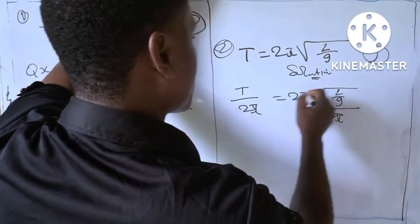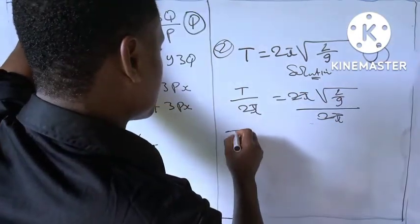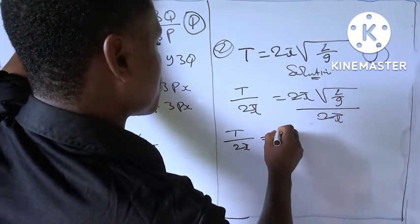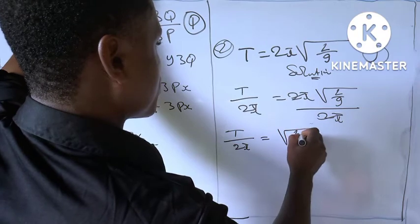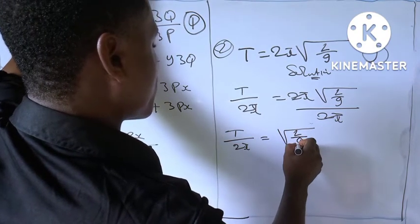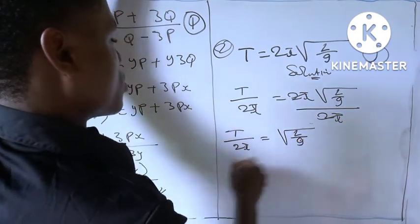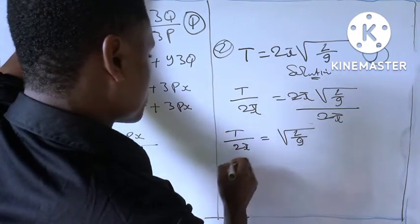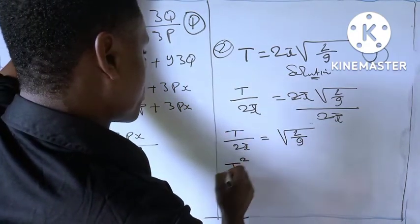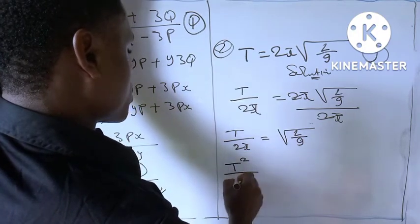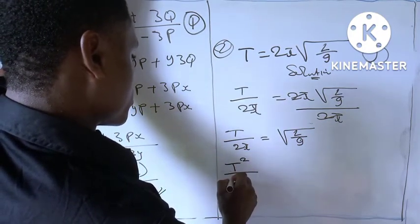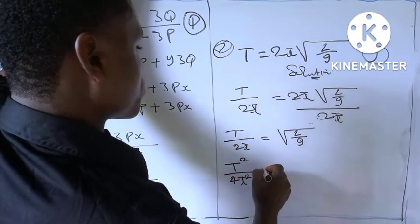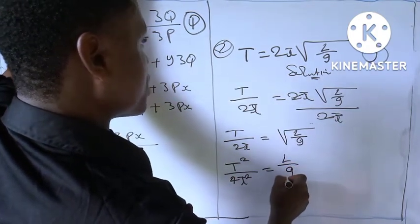So here we have t over 2pi equal to square root l over g. So we square both sides. So t times t to give us t squared over 2 times 2, that is 2 squared is 4pi squared, equal to l over g.